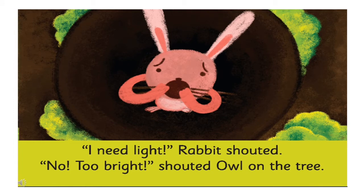Children, can you tell me why does rabbit want light? Because rabbit fell into a hole due to no light. Why does owl not want light? Because for owl it is too bright. So that is why owl shouted on the tree — no light. Yes, it is too bright for him.